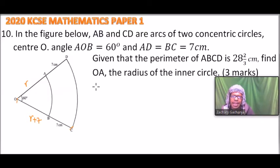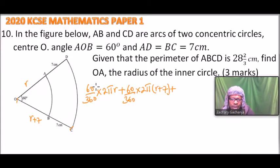First we get the length of arc AB. The length of AB is 60 divided by 360 multiplied by 2πr. Then you add the length of CD, which is 60 divided by 360 multiplied by 2π times (r plus 7). Then you add 7 and 7, so this is 14.